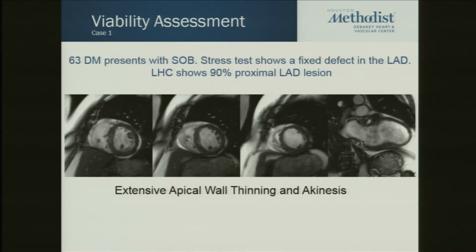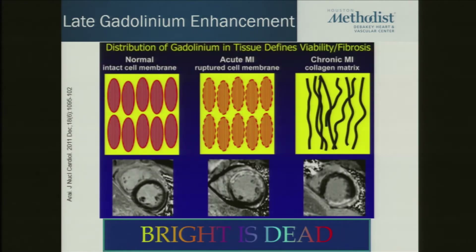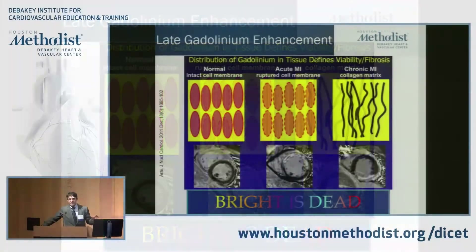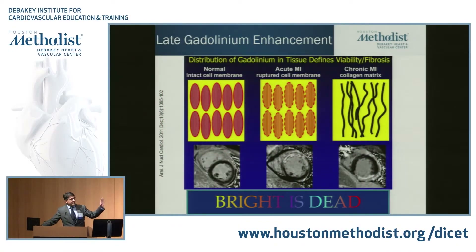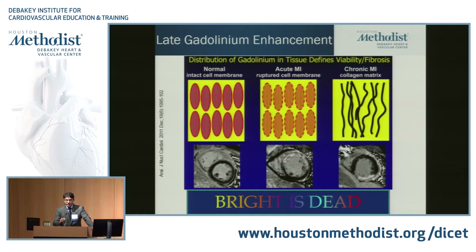How can CMR help us? We use a technique called late gadolinium enhancement. Late gadolinium enhancement involves the use of a gadolinium agent, which is an extracellular agent that accumulates in regions of dead tissue or scar. This occurs in both acute and chronic myocardial infarctions. This is the only technique where you can see living and dead tissue in the same image. The dead tissue appears as bright hyper-enhancement — the white. Our mnemonic is: bright is dead.